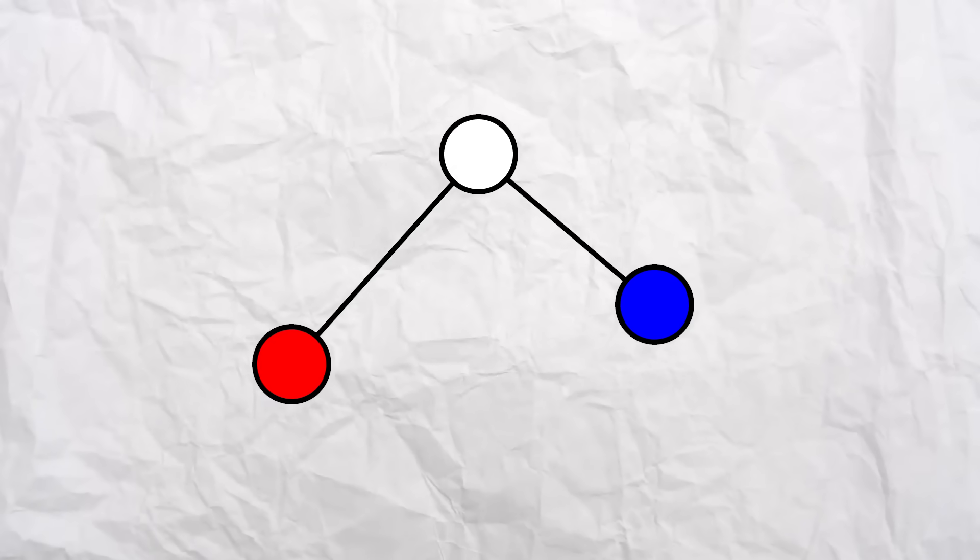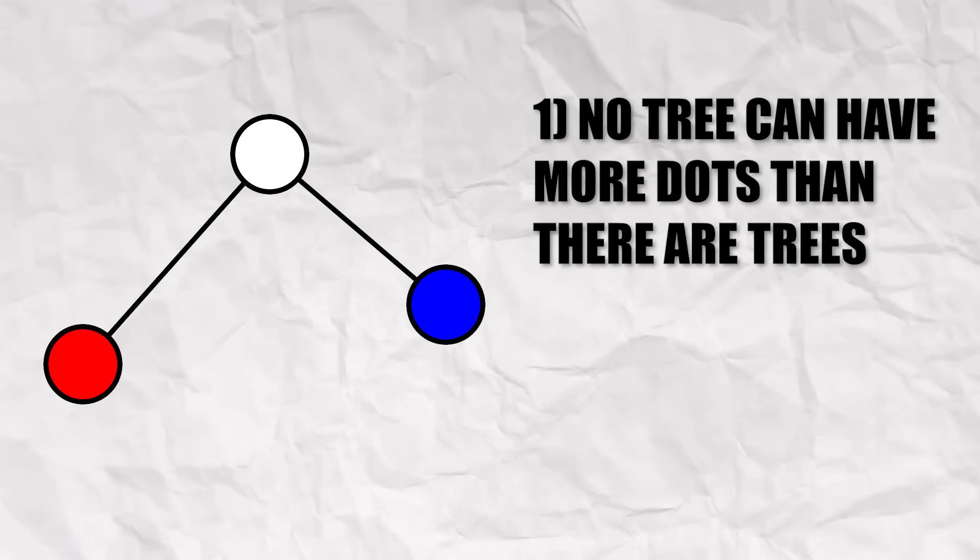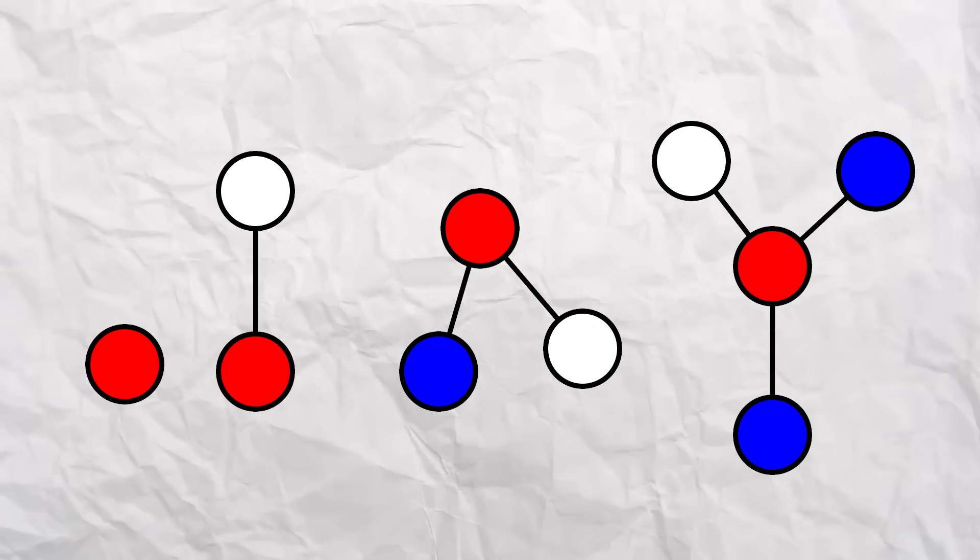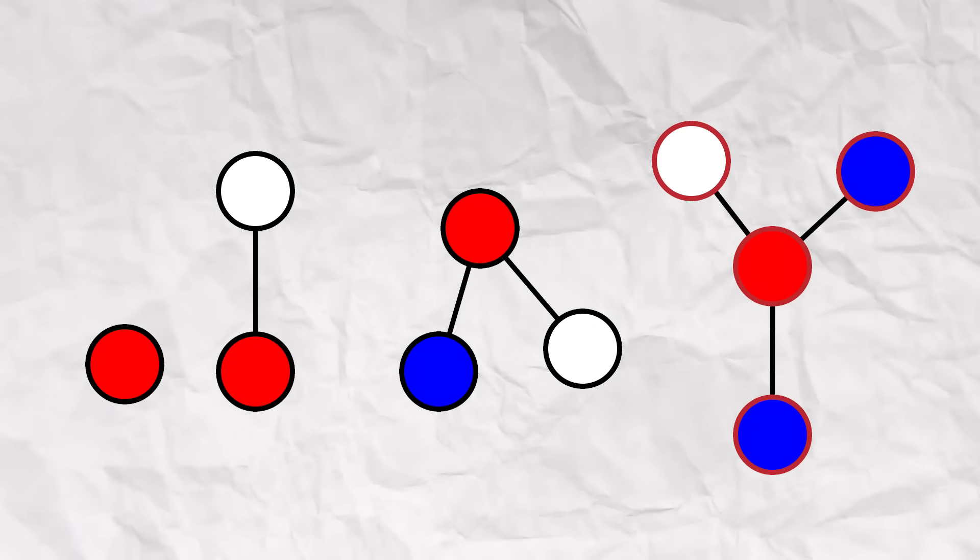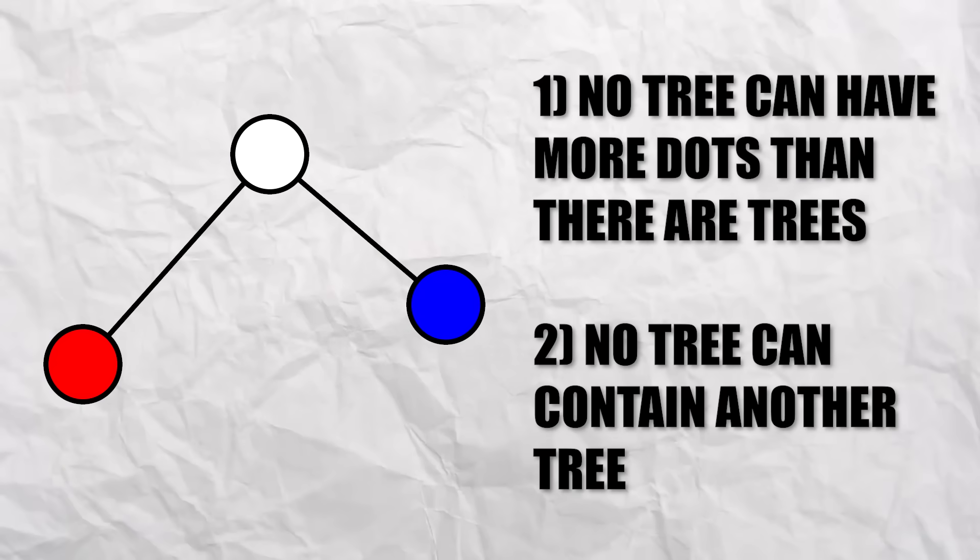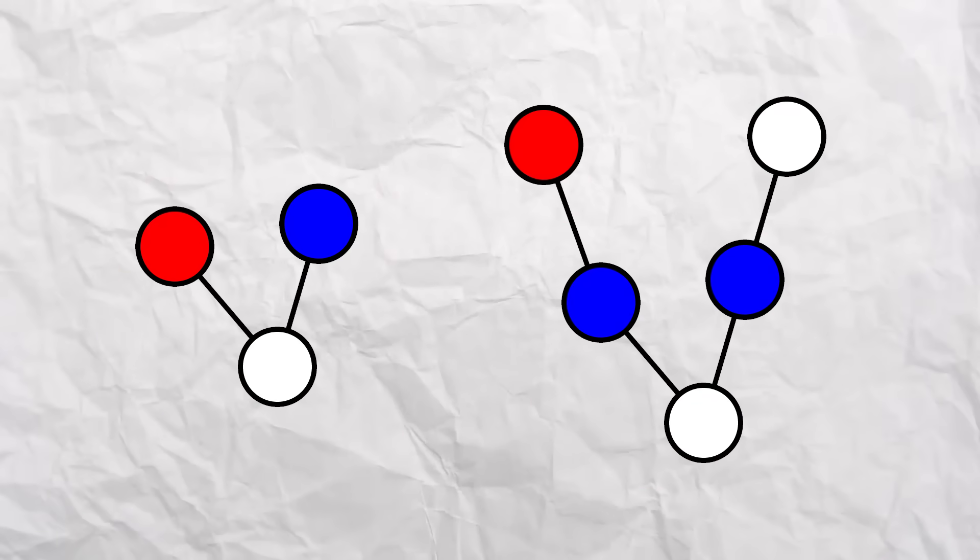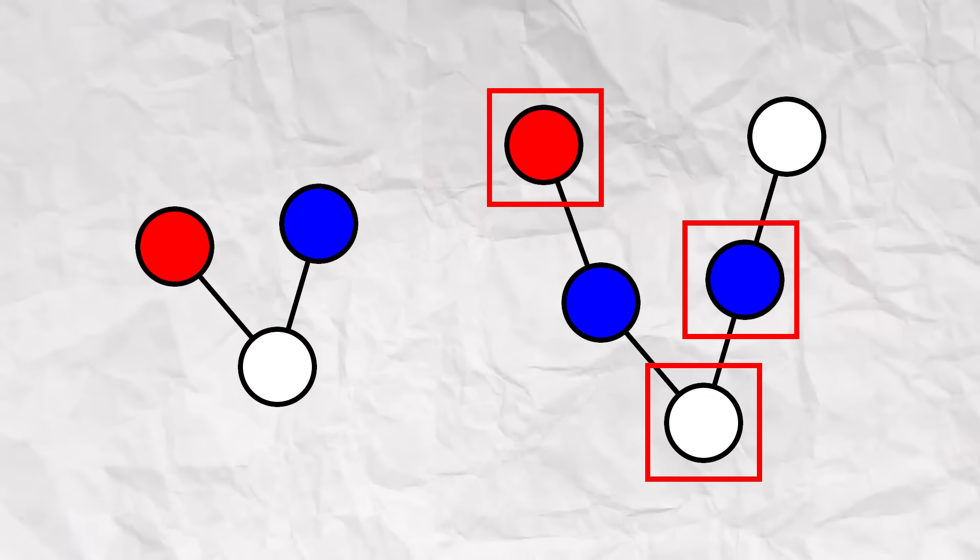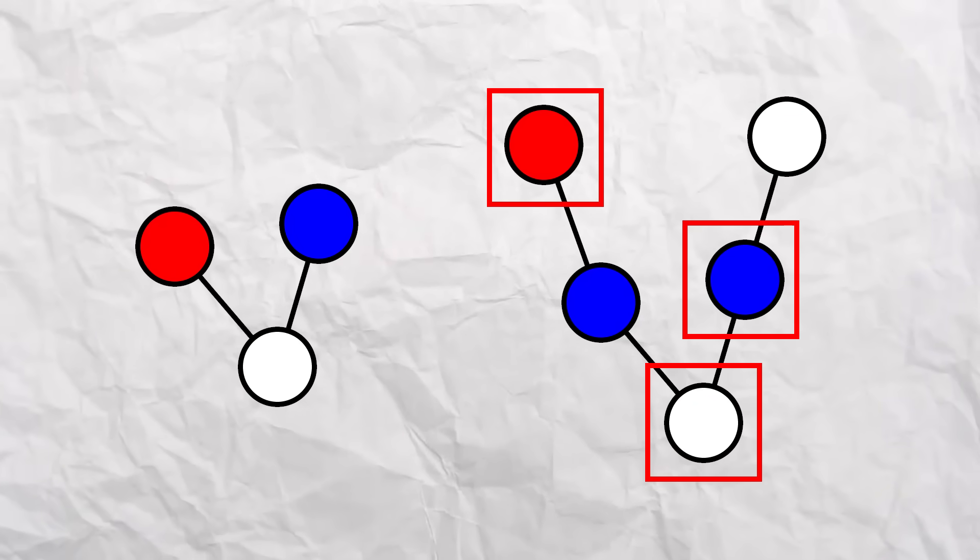Our game starts with 3 colors of dots, red, white, and blue, and we'll be connecting these to form trees. The first rule is that no tree can have more dots than there are trees, so the fourth tree can't have more than 4 dots. And the second rule is that no tree can contain another tree. This can look like this, or even this.